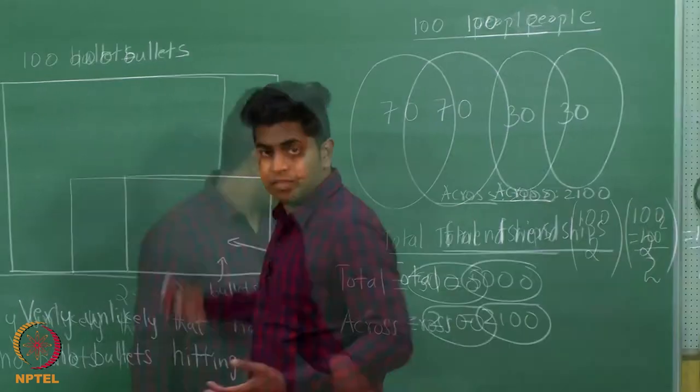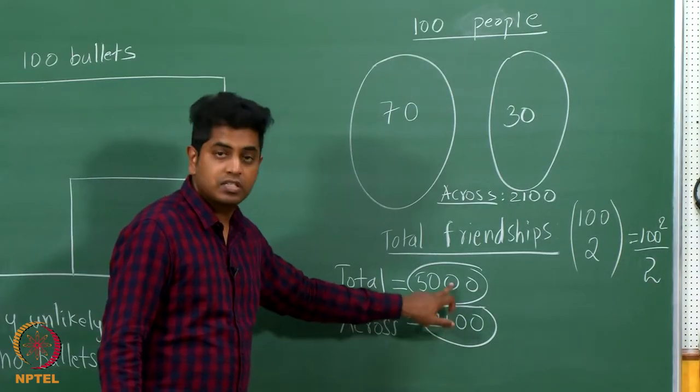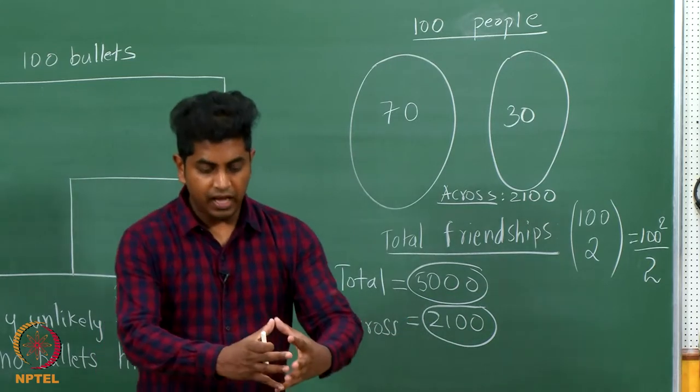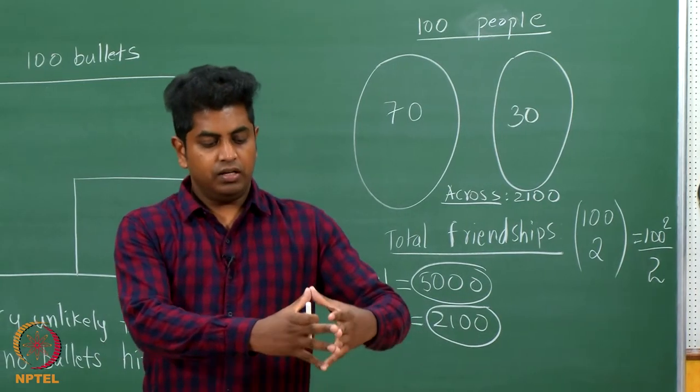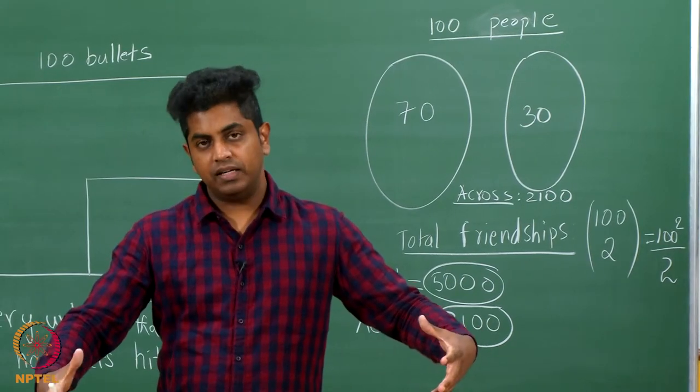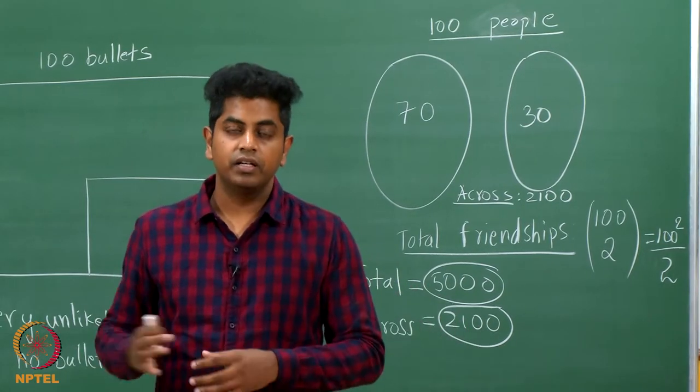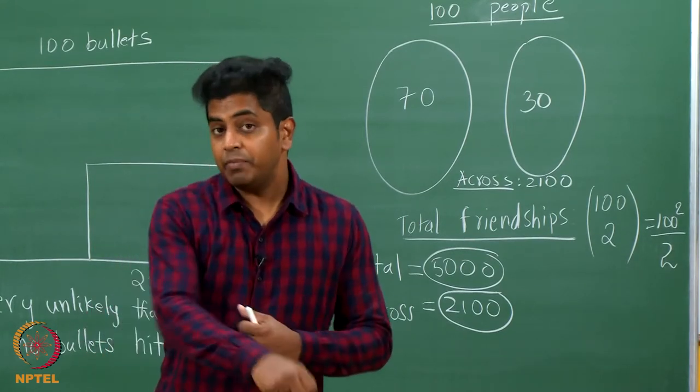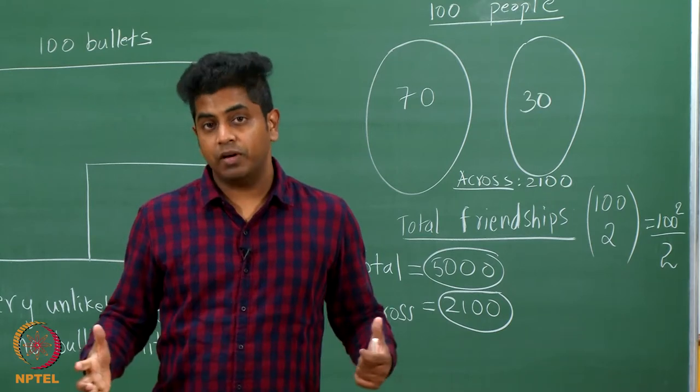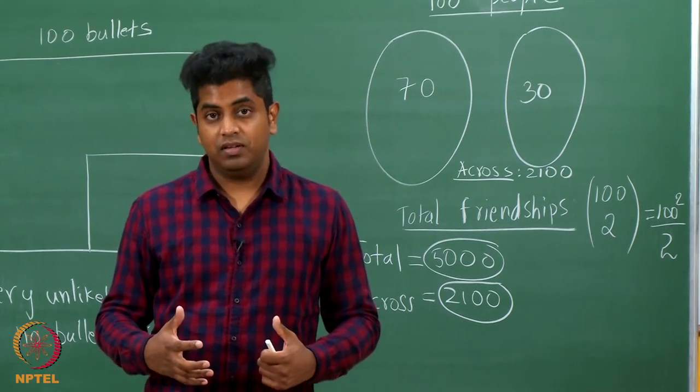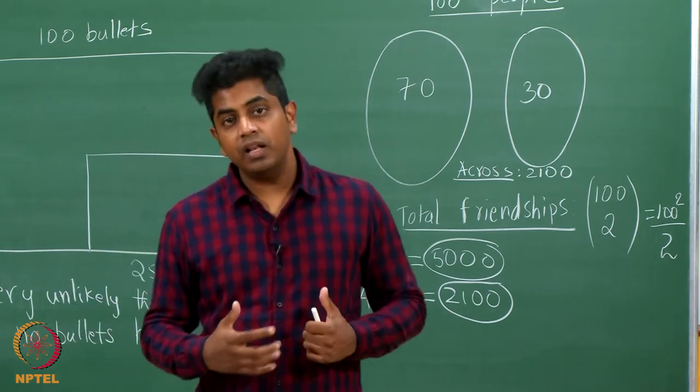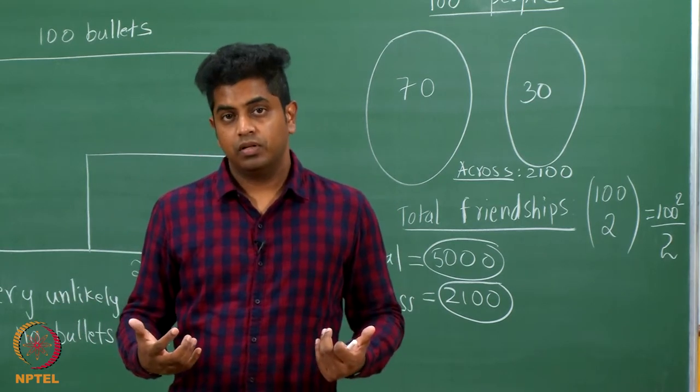The intuition is this: do you see this is roughly half of this? There are, let's say, 20 balls in a basket - 10 black, 10 white. You pick some balls from this basket, all of them are black. You are picking them uniformly at random and all of them are black. Is this even possible? It is not possible. It is not impossible, it is improbable.